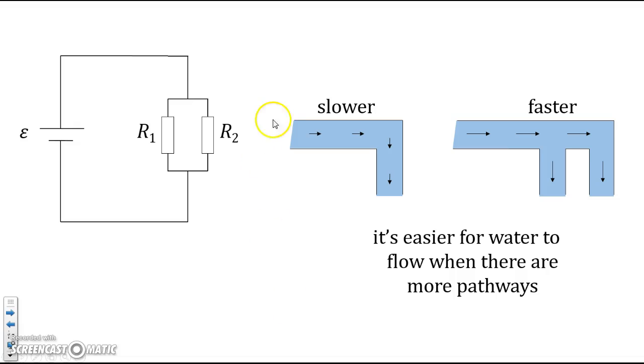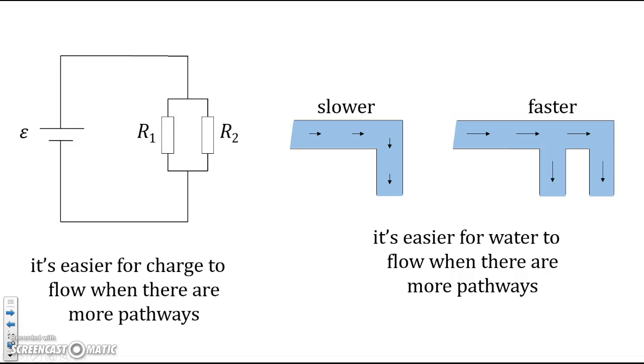The same thing is true of resistors. It's easier for current, for charges, to flow when there are more pathways, R1 and R2. That means, by connecting a second resistor, the total resistance goes down when you connect another resistor in parallel.